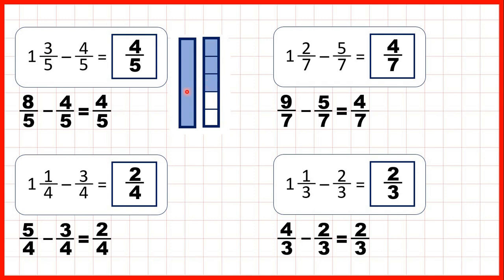So what we did was really to change our 1 whole into fifths. That's why 1 and 3 fifths, as an improper fraction, is 8 fifths, because now you can see that each of these parts is a fifth, and we have 8 parts altogether.